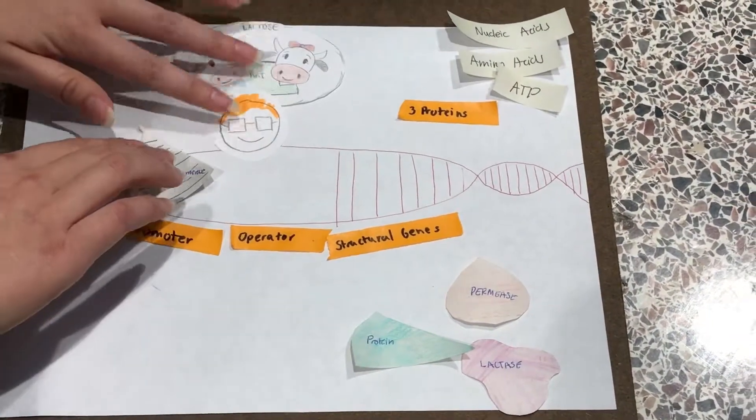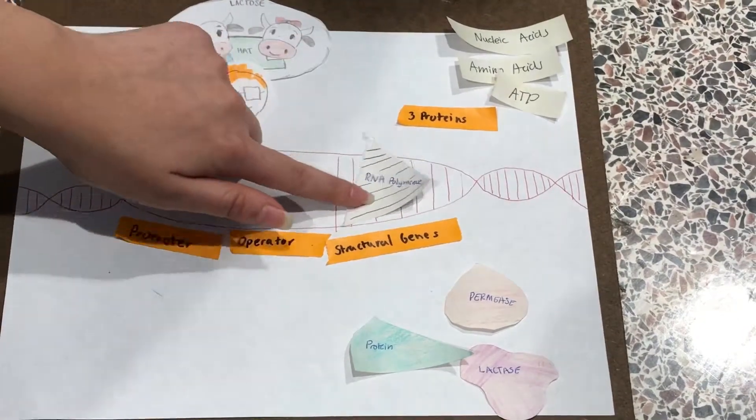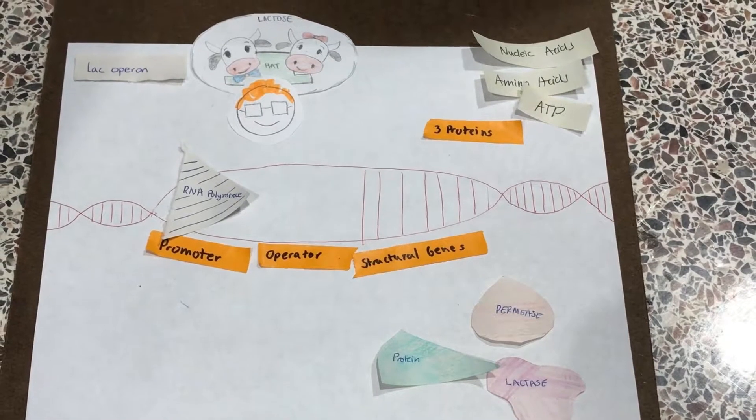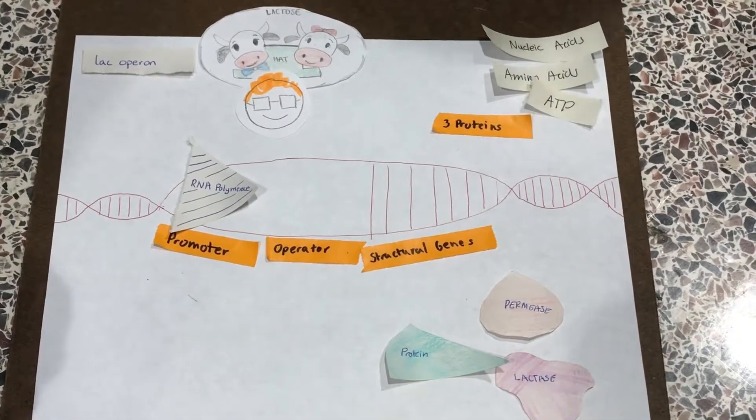So the RNA polymerase will be able to move and read these structural genes, which will help process all the lactose in the environment and inside the cell.